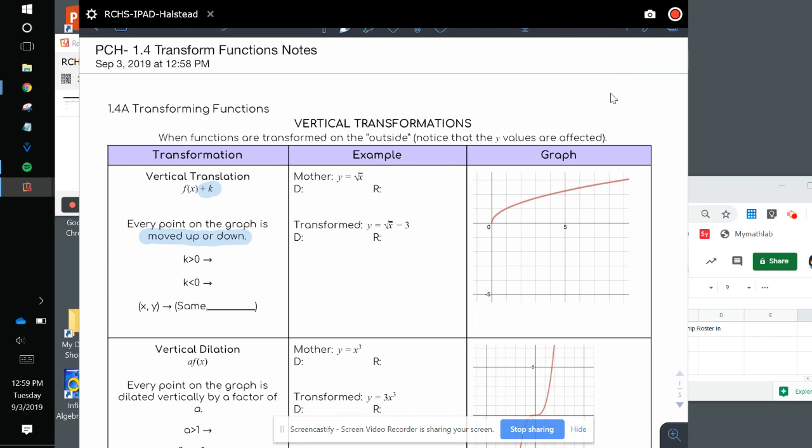If k is greater than 0, which means positive, then the graph moves up. If it's less than 0, the graph moves down. The points on the graph are x stays the same, but the y is changed by adding k.